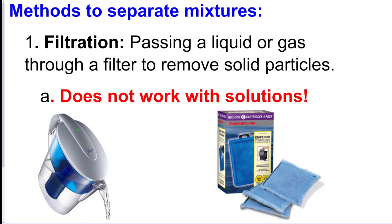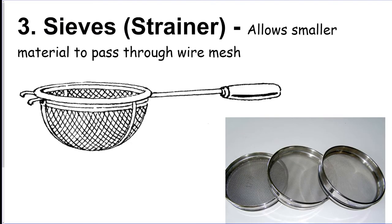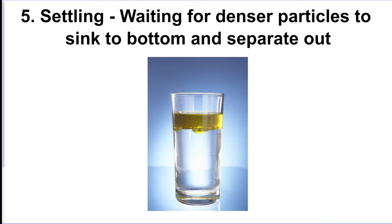Now there are seven different ways to separate a mixture. The first is filtering — like a coffee filter, it keeps solid particles in the paper while liquid passes through. Sorting is when you just separate them by hand. You can also use a sieve or strainer to let smaller particles pass through while catching bigger ones, like straining pasta.